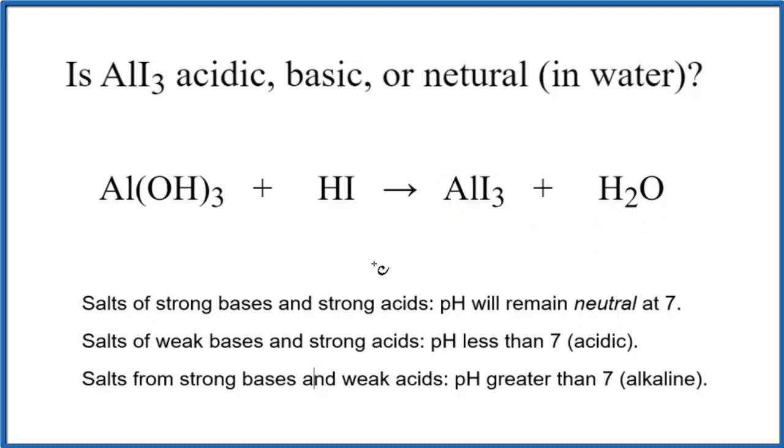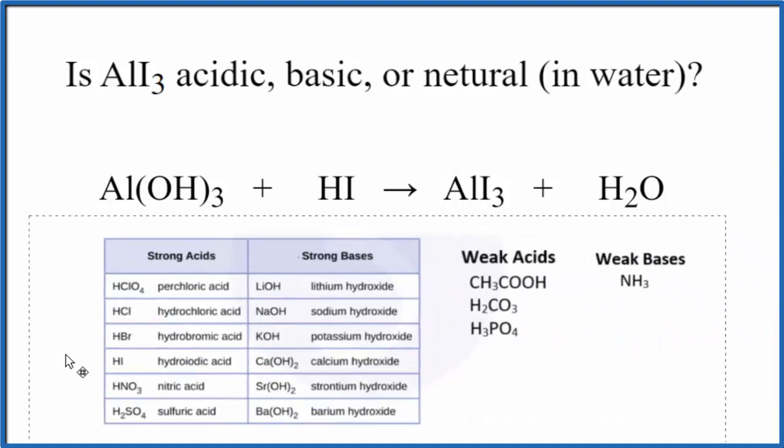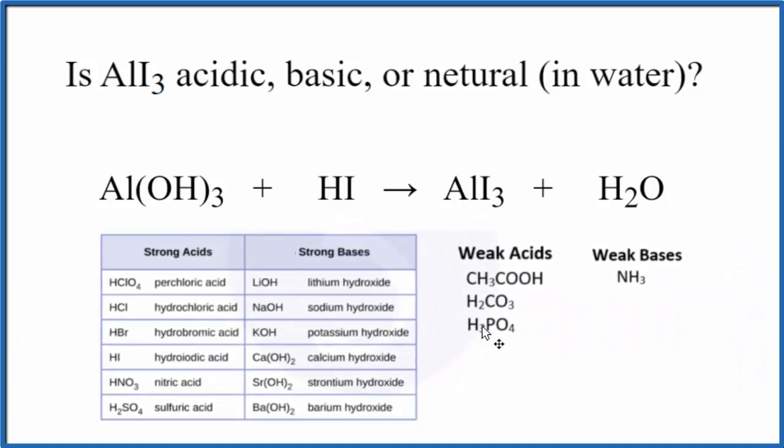So we have our reaction, now we need to find the strength of the acid and the base. So this is a helpful table to memorize. Here's the strong acids, strong bases. We don't see aluminum hydroxide on our list of strong bases, so we're going to consider this to be a weak base.